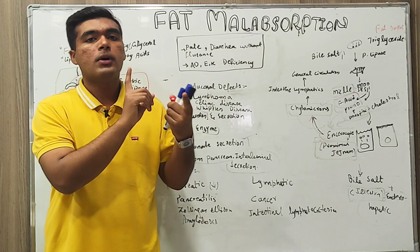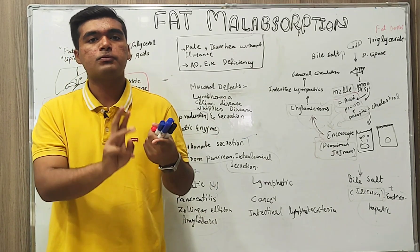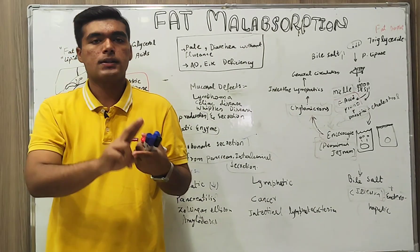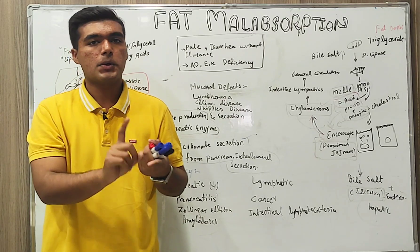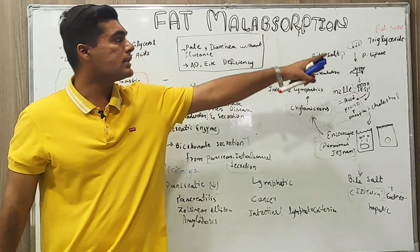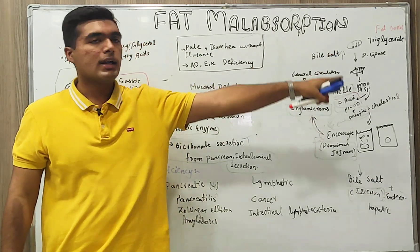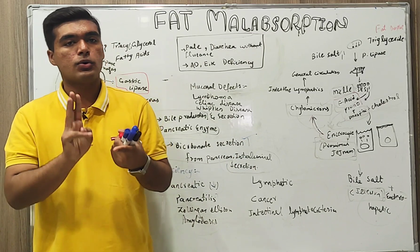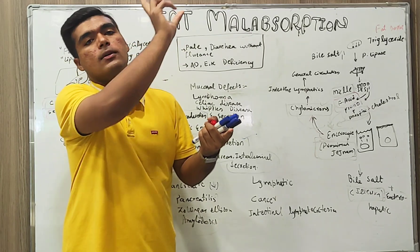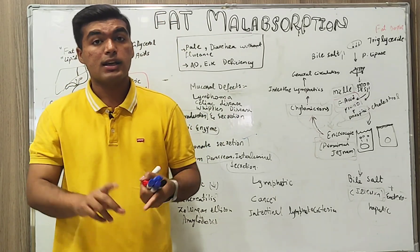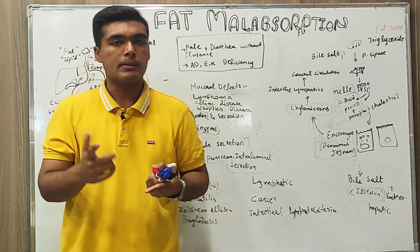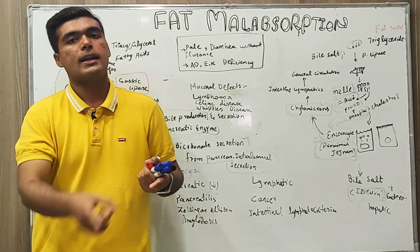A quick overview: from the mouth we have mastication and lingual lipase; from the stomach we have gastric lipase, pH decrease, and acidity increase; from the duodenum, fat is still in triglyceride form; cholecystokinin and secretin are involved; then triglycerides combine with bile salts, fatty acids combine with chylomicrons and are absorbed via general circulation from intestinal lymphatics, while bile is absorbed via enterohepatic circulation from the liver.